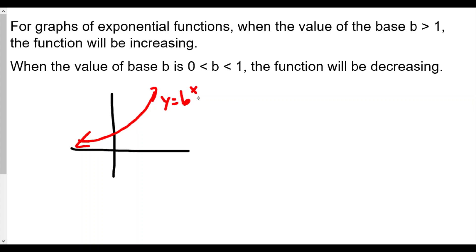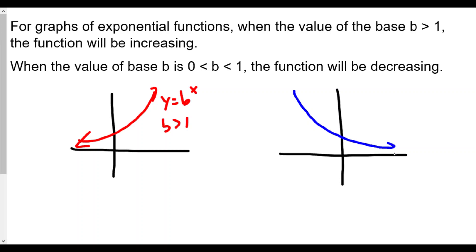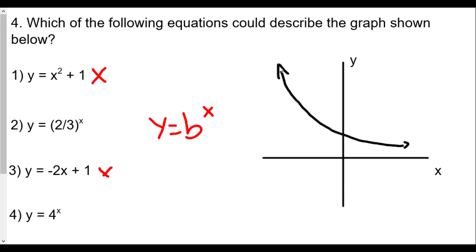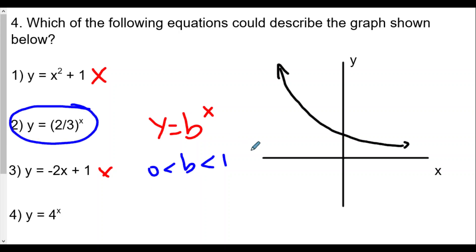A general rule for graphs of exponential functions: when the base b is greater than one, the function is increasing. When the base b is between zero and one, the function is decreasing. Looking at the graph, the function is decreasing — y values go downward from left to right — which means our base must be between zero and one. That would be choice number two.